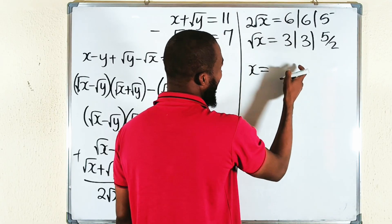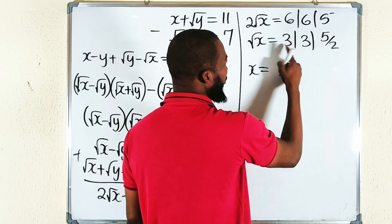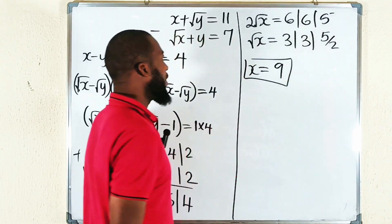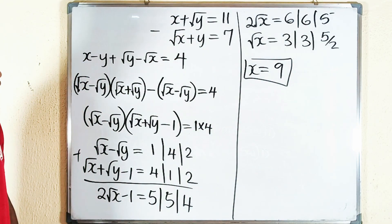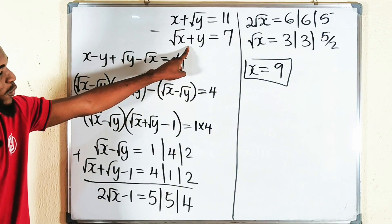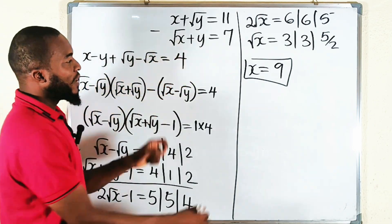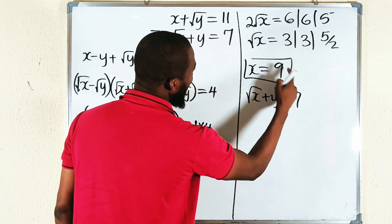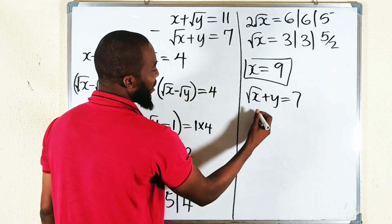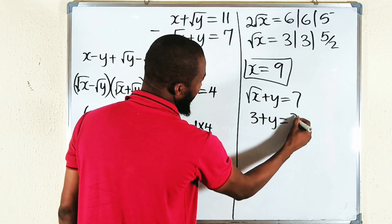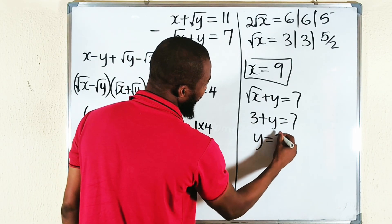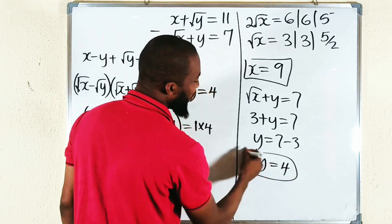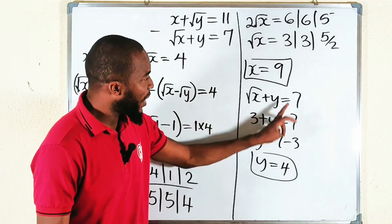Now, how do we find y? We use the equation square root of x plus y equals 7. Since square root of x is already 3, we have 3 plus y equals 7, which means y equals 7 minus 3, so y equals 4. And remember, both must be perfect square numbers — 9 and 4 are indeed perfect squares.